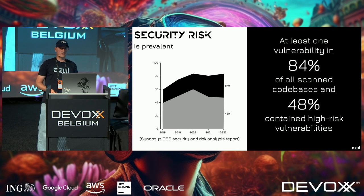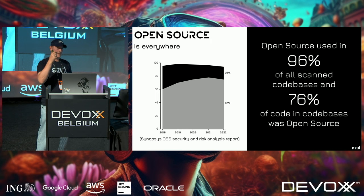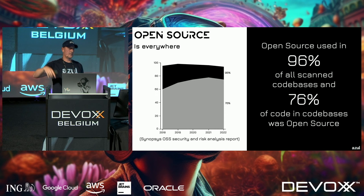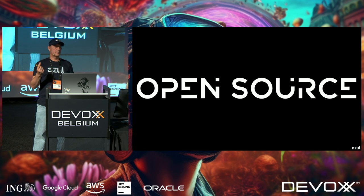Synopsys scanned code bases and found at least one vulnerability in 84% of them, with 48% containing high-risk vulnerabilities. Open source was used in 96% of scanned code bases, and 76% of the scanned code was open source. Security is really important — you're probably affected even if you think you're not.